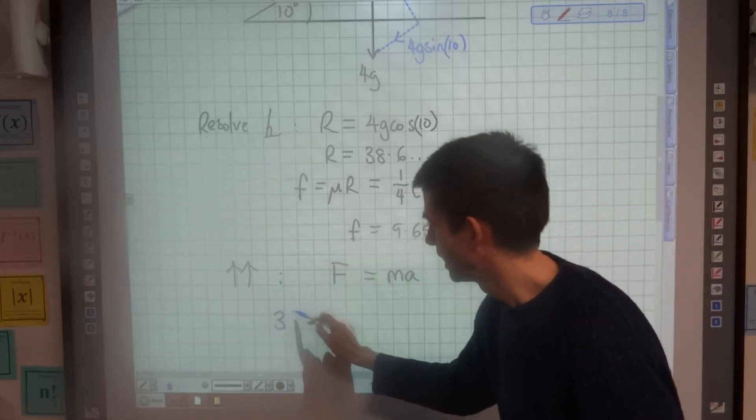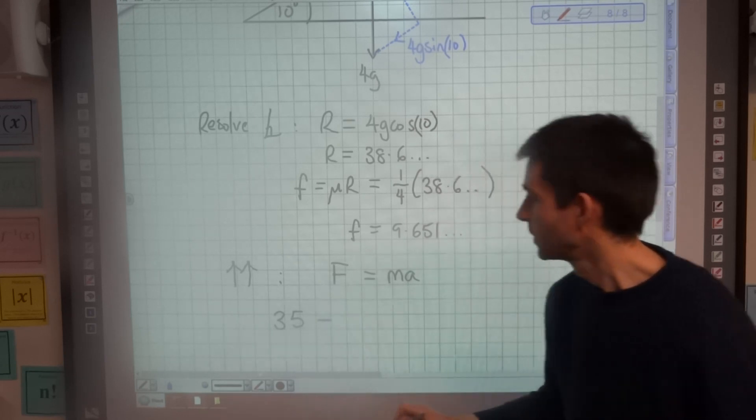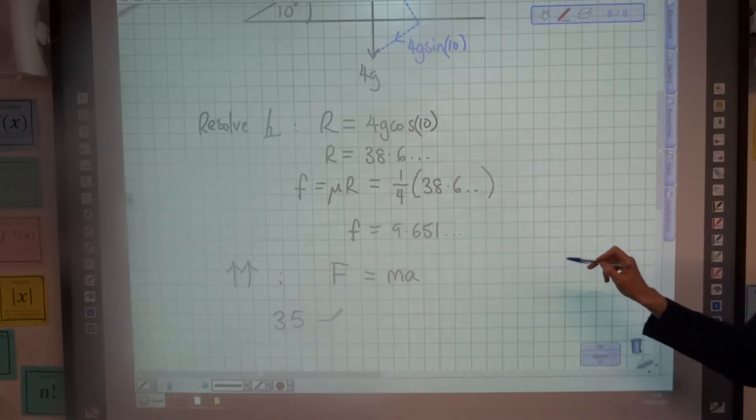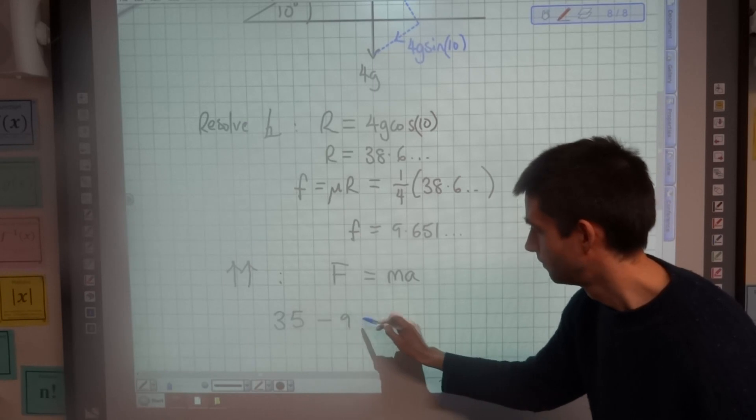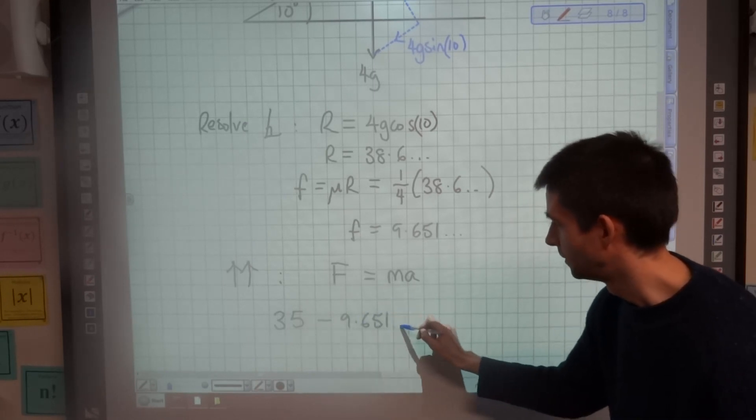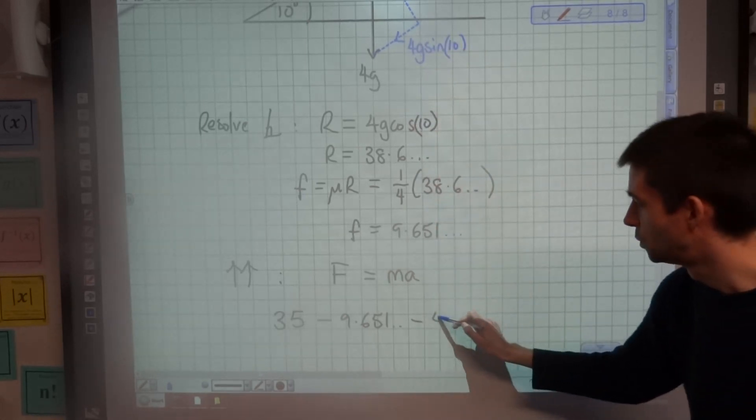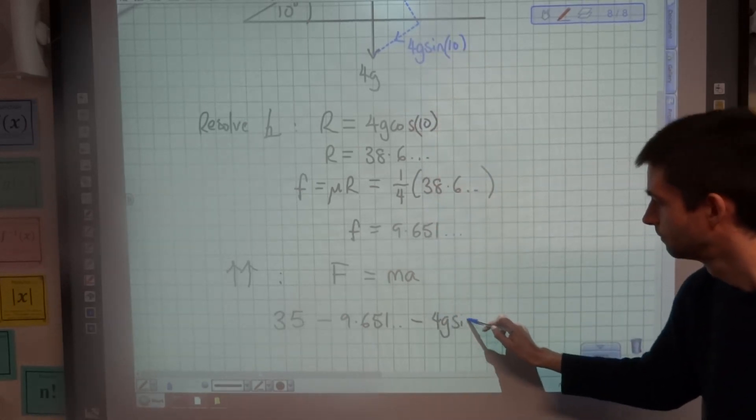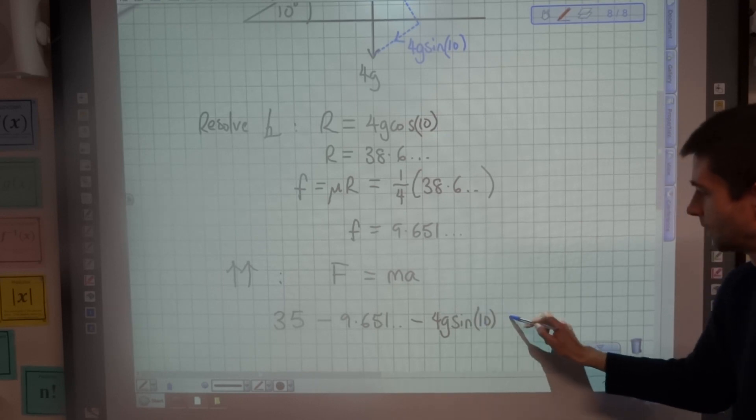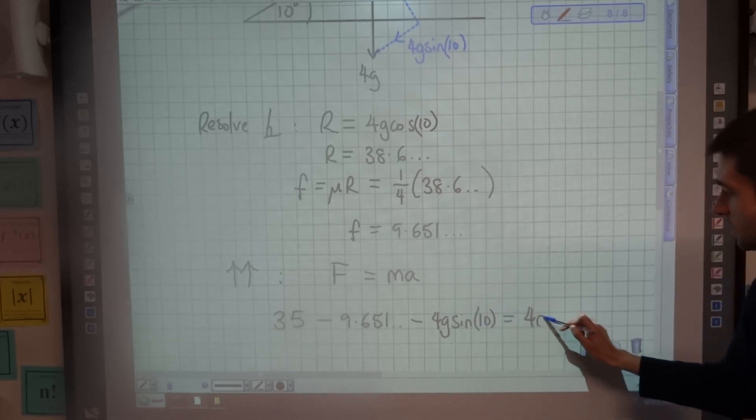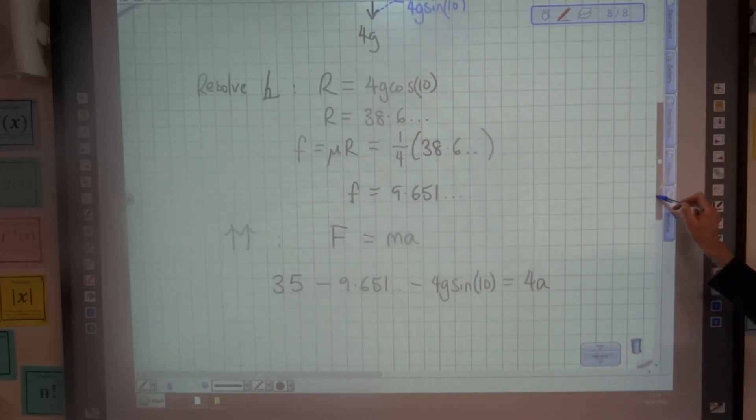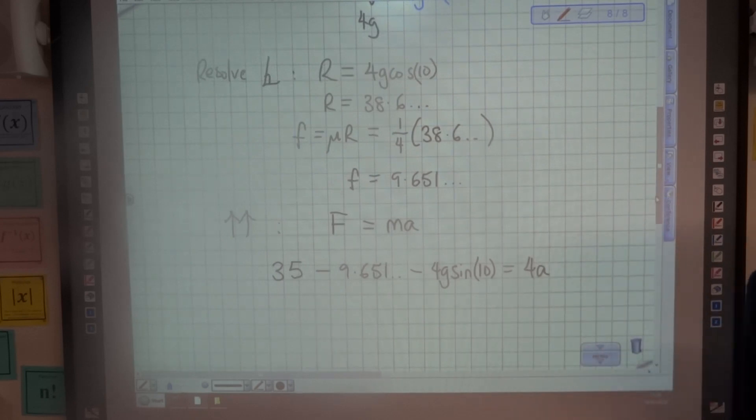The force in the direction of motion is 35. Now I'm going to have to take off, in addition to the friction 9.651, I'm also going to have to subtract this parallel component of weight, which is 4G sin 10, and that is going to equal mass multiplied by acceleration, so mass of 4 multiplied by acceleration.